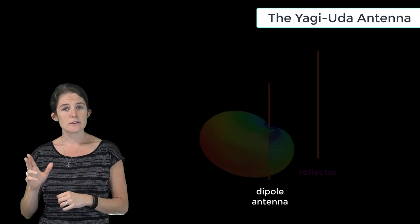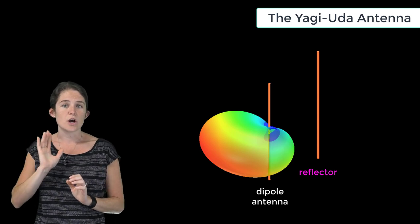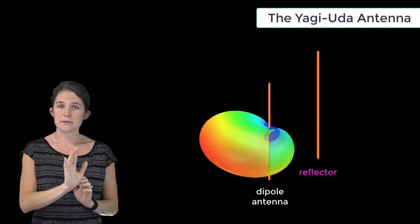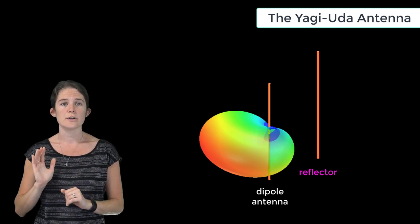Addition of a single conductive linear element that is slightly longer than the dipole pushes the radiation away from that added element. Because of this effect, this added element is called a reflector.